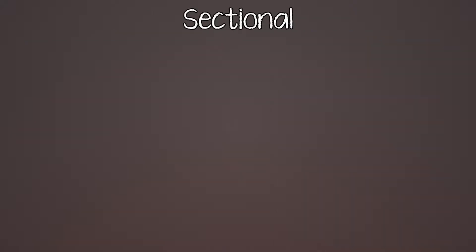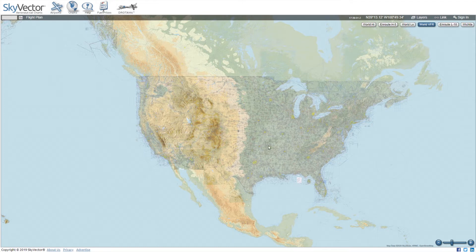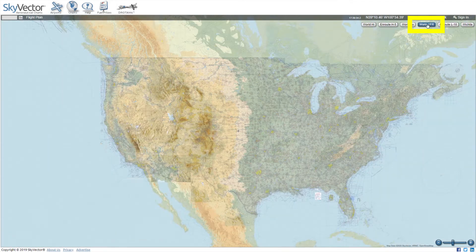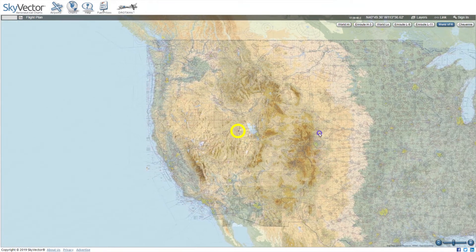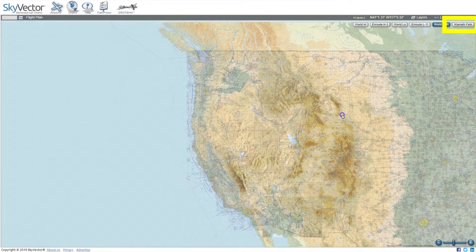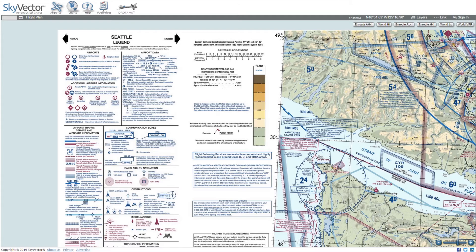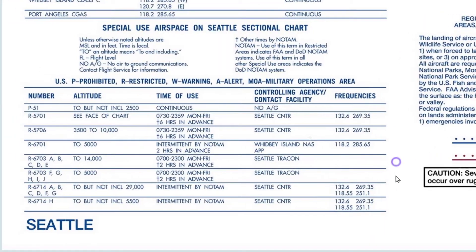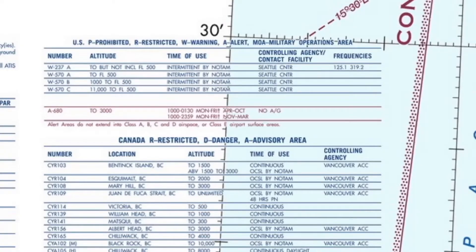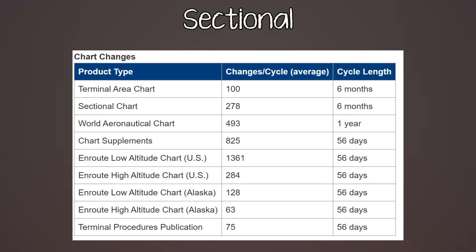Starting with the sectional chart — you can go to skyvector.com and look at the charts. World VFR is a seamless chart that puts all the charts together, but you can select individual charts by moving the crosshair and selecting the applicable chart. That lets you see the legend on the side, including military, prohibited, restricted airspaces, and their associated times, altitudes, and frequencies. Charts are updated every six months and chart supplements every 56 days, so if anything changes in between, there will be a NOTAM for it.